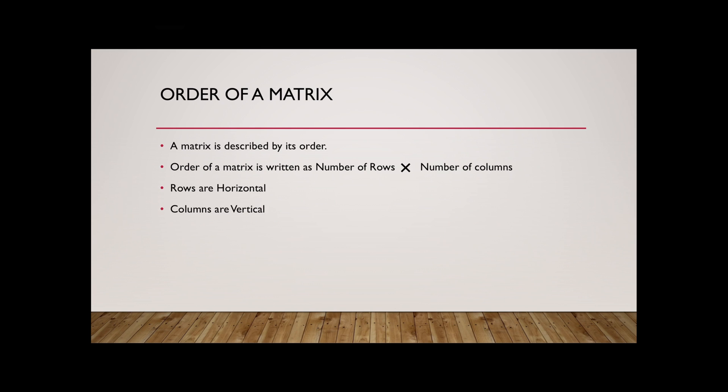Any matrix is defined by its order. Now what is order? Order, as you can see, is basically the number of rows times the number of columns. Now, as you can see, rows are counted horizontally and columns are counted vertically.